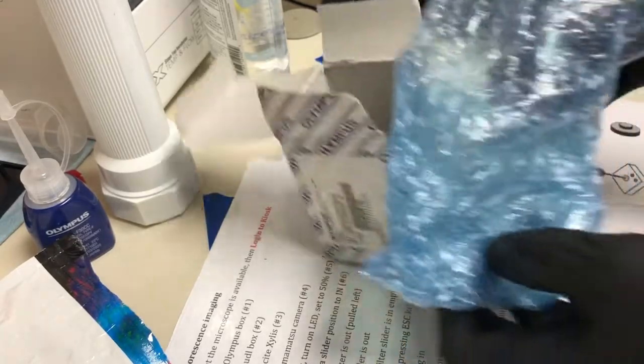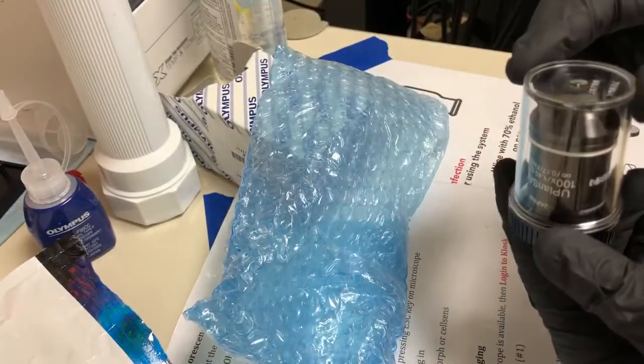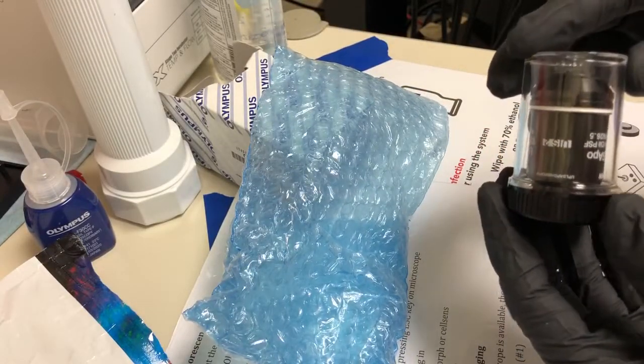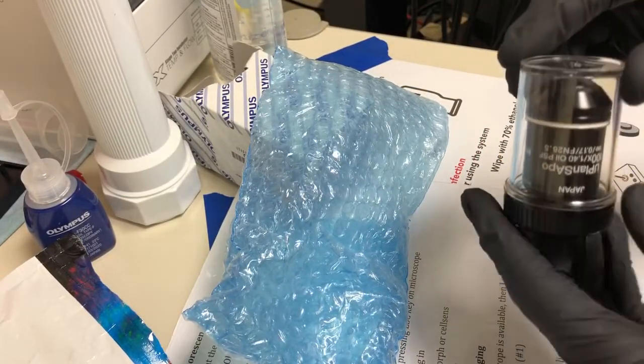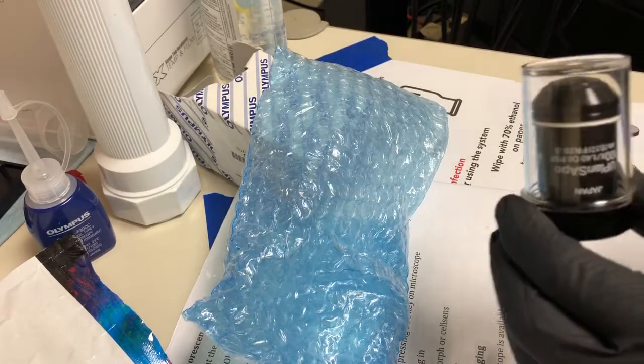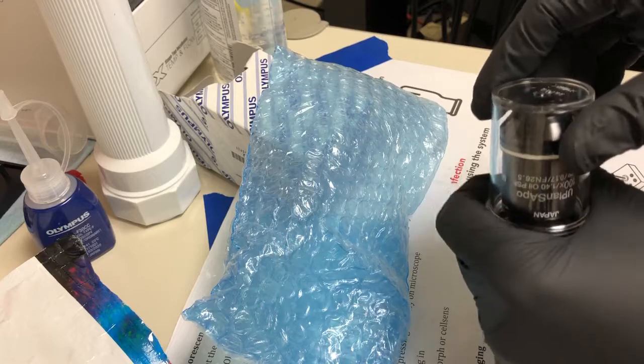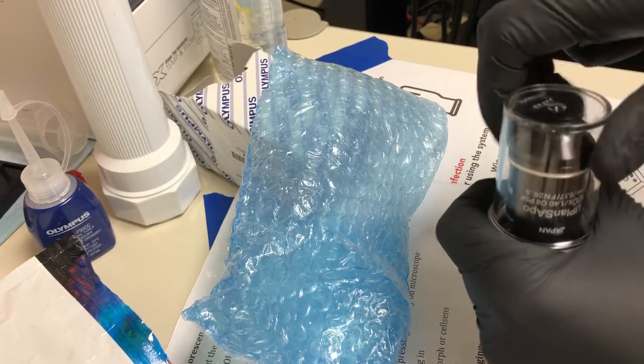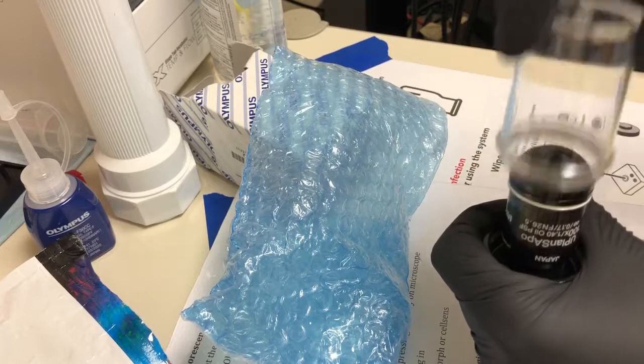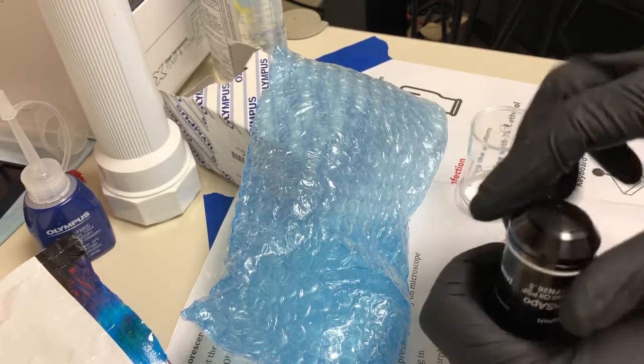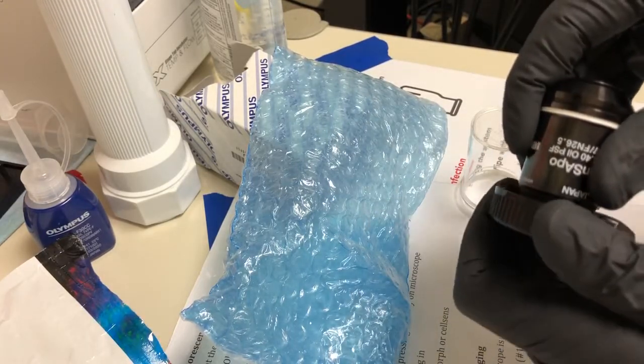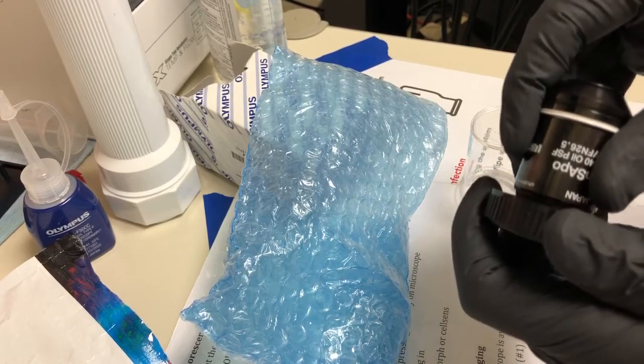Inside the bag, there's a holder for it. The objective is screwed onto the base, this black thing, so we can hold the black part and unscrew the top to access the objective. Then we can hold the objective and unscrew the bottom when we're ready to put it on the microscope.